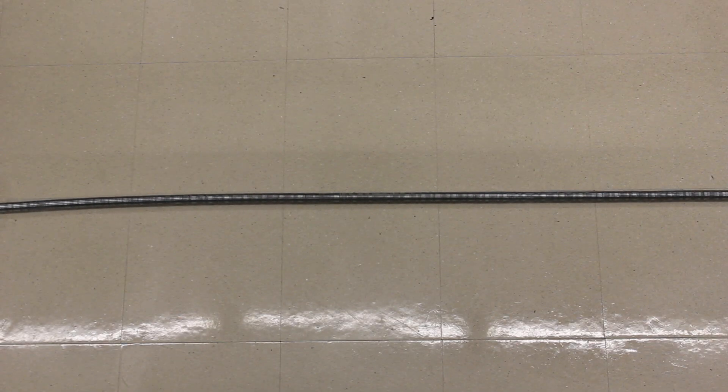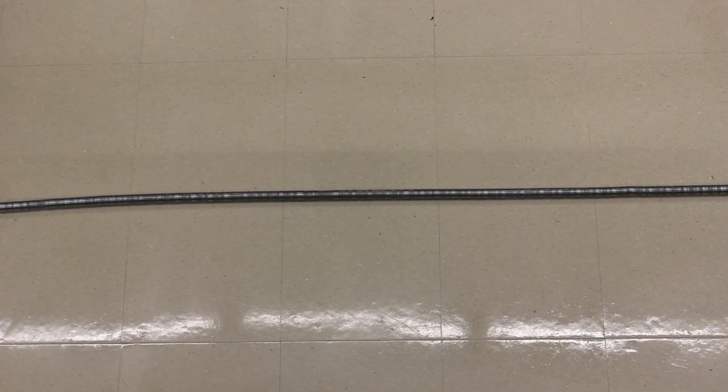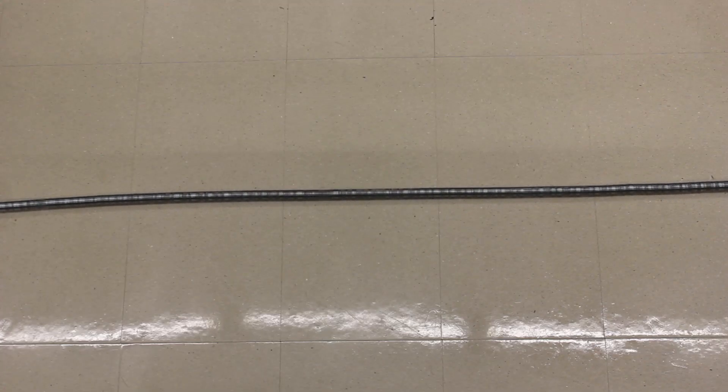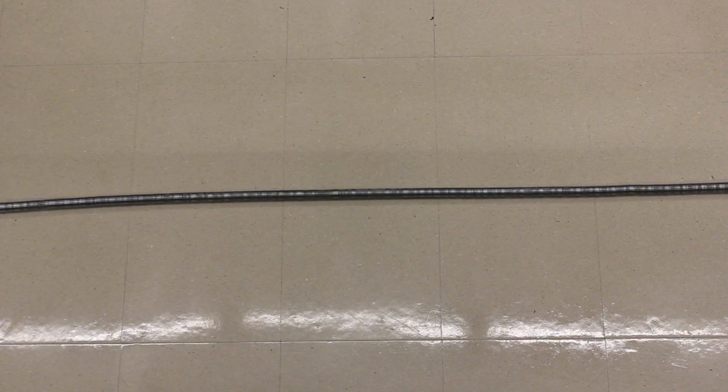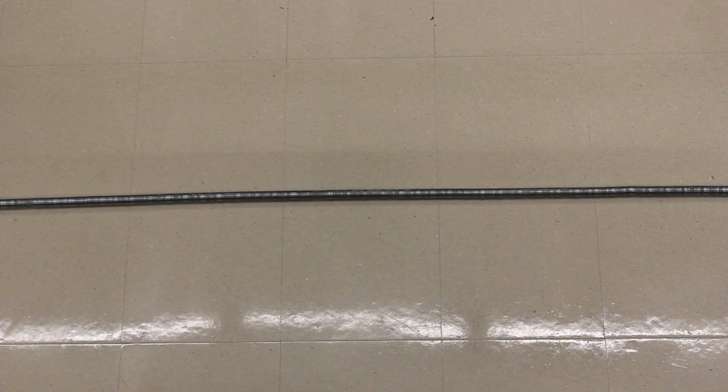So, what we're going to show here is what happens when two pulses on a string come together. For the string, we've got this dense metal spring which has a high mass per unit length so that the speed of the pulses is not going to be exceptionally high. Now, what we're going to do to start with is send two pulses with the same sign along the string.